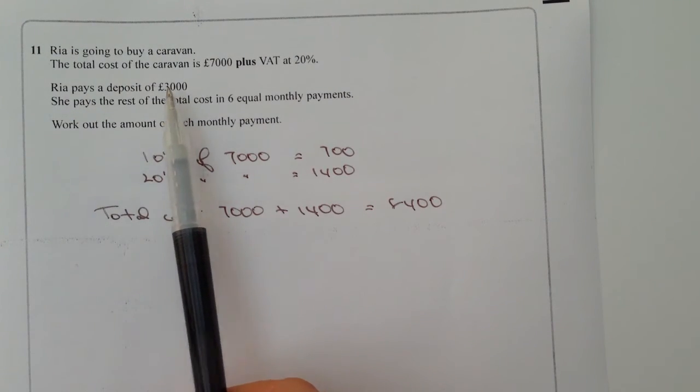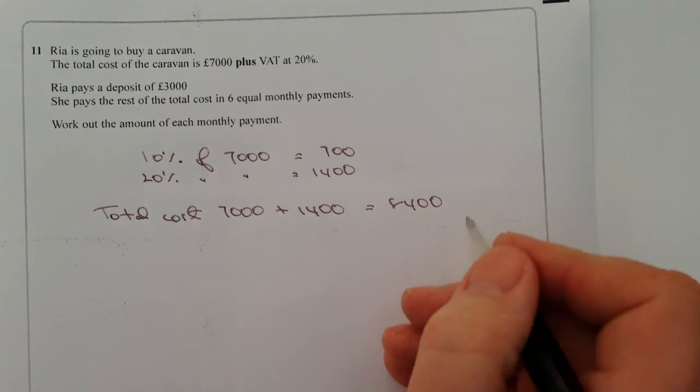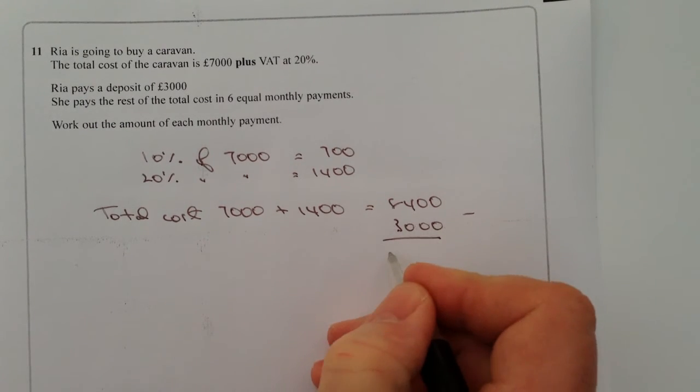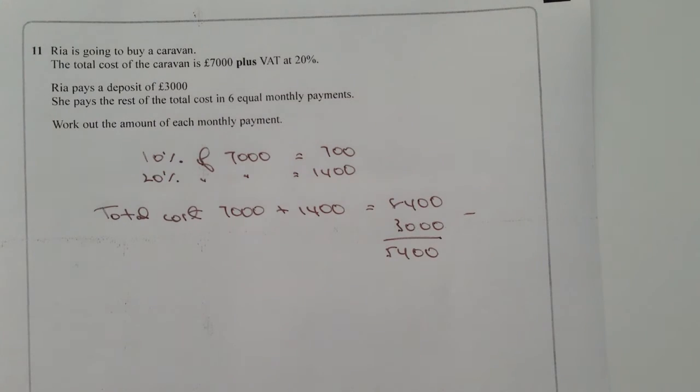So a deposit is paid of £3,000. If we minus the £3,000 deposit, it means that the £5,400 that's left is going to be paid over a six month period.